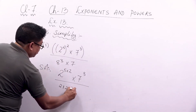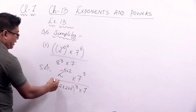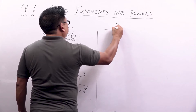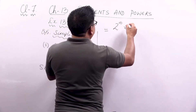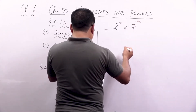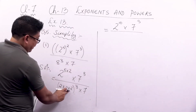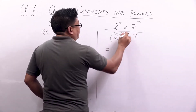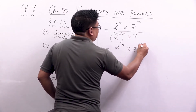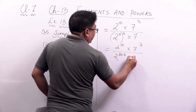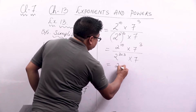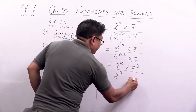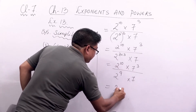I can write 8 as 2 into 2 into 2, which is 2 to the power 3, to the power 3 into 7. So we get 2 to the power 10 into 7 to the power 3, divided by 2 to the power 3 into 3 into 7. That is 2 to the power 9 into 7 in the denominator. The two bases are the same, so we subtract the exponents.